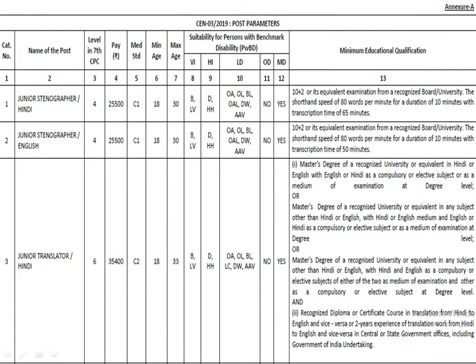The first post is Junior Stenographer in Hindi. This is a Level 4 post with a pay band of 25,500. The minimum age to apply is 18 and the maximum age is 30. Age relaxation details will be explained later.